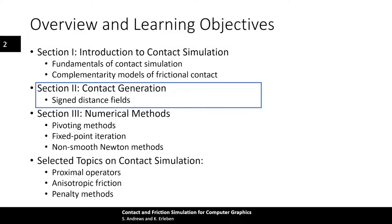Then we will take a look at how contacts are generated from object geometry. We will show how essential components of our contact models may be computed from various shape representations of the objects in a simulation. Specifically, we focus on signed distance fields, which are a popular choice for performing collision detection between objects in graphics applications.